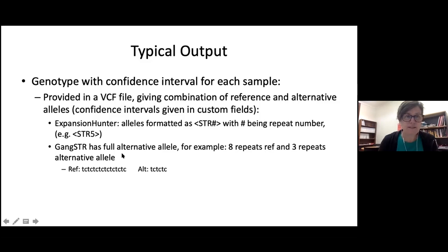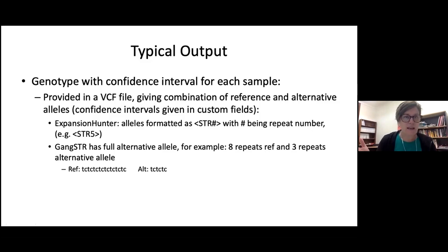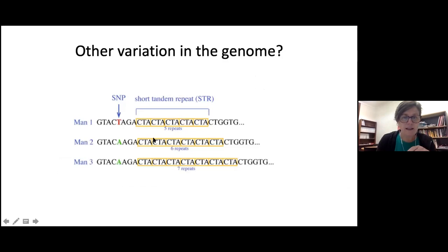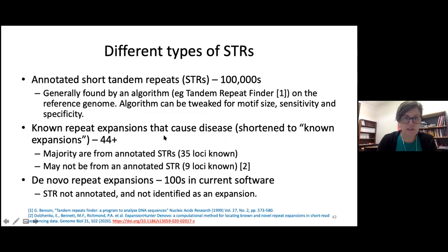I've got 832,000 STR loci — similar to the 800,000 SNPs from my genotyping array, but instead of just having 0, 1, or 2 of an allele, I have, say, 8 on one chromosome and 3 on the other, or 5 and 5. Because these short tandem repeats are not bi-allelic — unlike my SNPs which have only two alternatives — STRs can have many alleles.